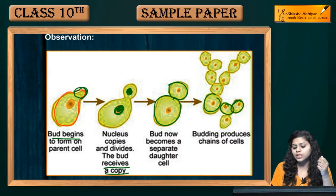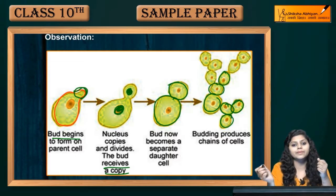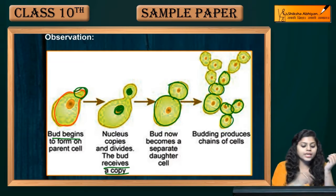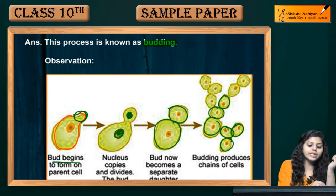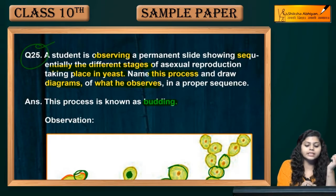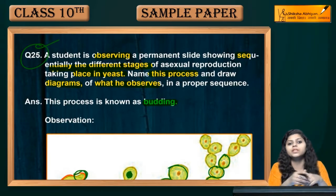The bud separates from the parent, and this is the process of budding. It will produce many chains in yeast. This is the process of asexual reproduction in yeast. This was question number 25.